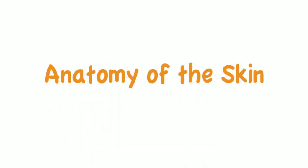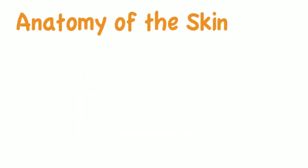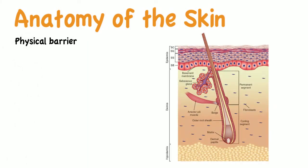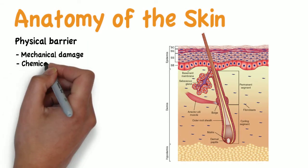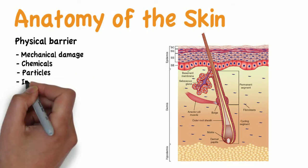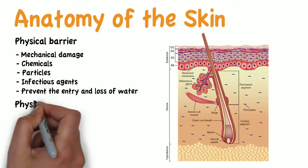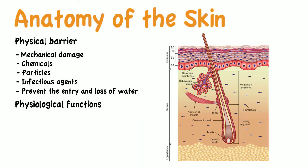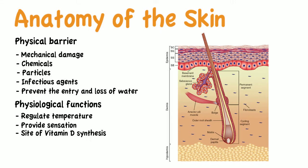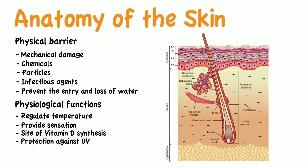The anatomy of the skin. The skin is a physical barrier that protects our bodies against mechanical damage, chemicals, particles and infectious agents, as well as preventing the entry and loss of water. The skin has many physiological functions: it serves to regulate temperature, it provides sensation and nerve signaling, it is the site of vitamin D synthesis, it offers protection against UV radiation, and it is also part of our immune defense.